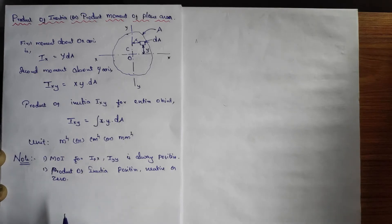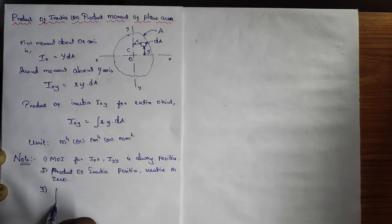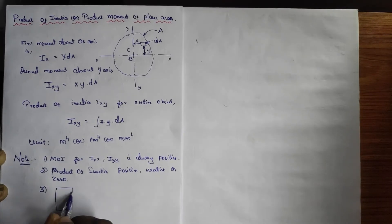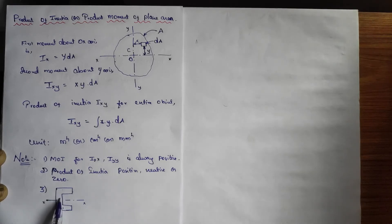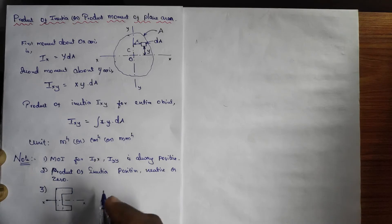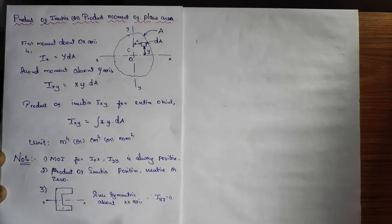For some areas, like when you have a symmetric area, the product of inertia will be zero. For example, take a C-section. If you take it with respect to the X axis, above and below it is a mirror image — both are the same. Since this C-section is symmetric about the XX axis, the product moment of inertia will be zero.